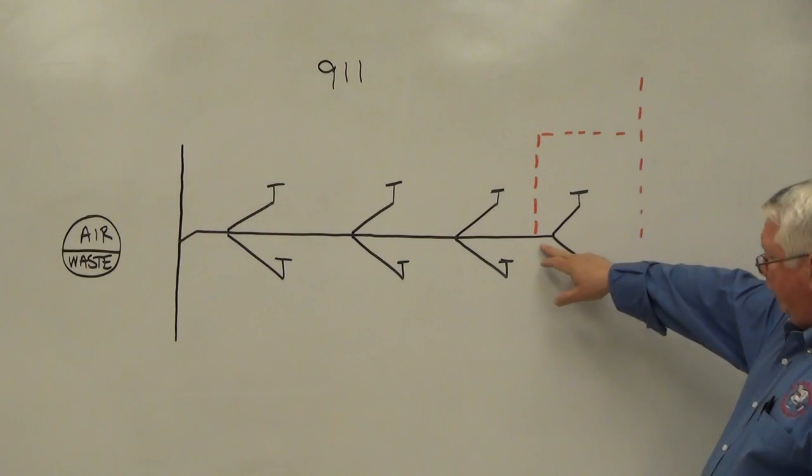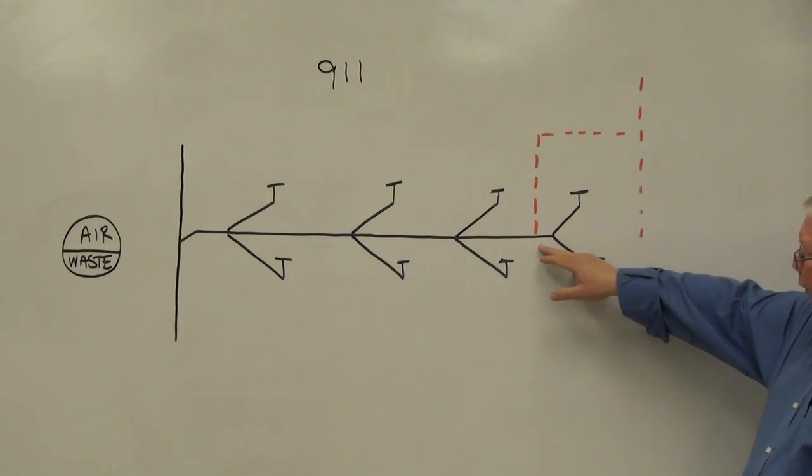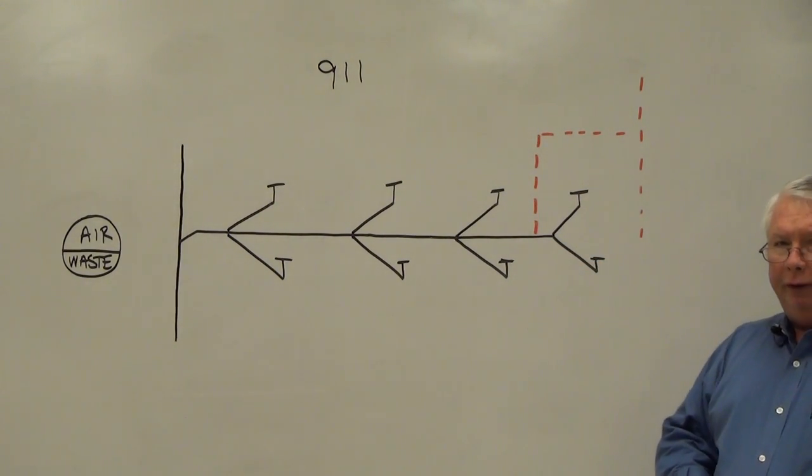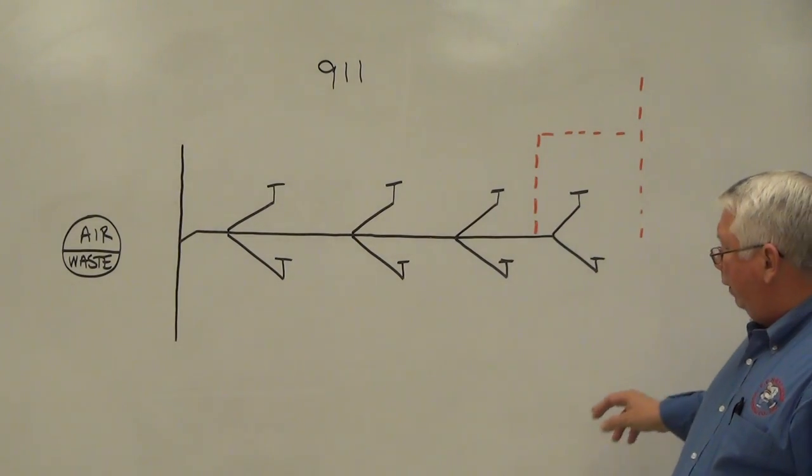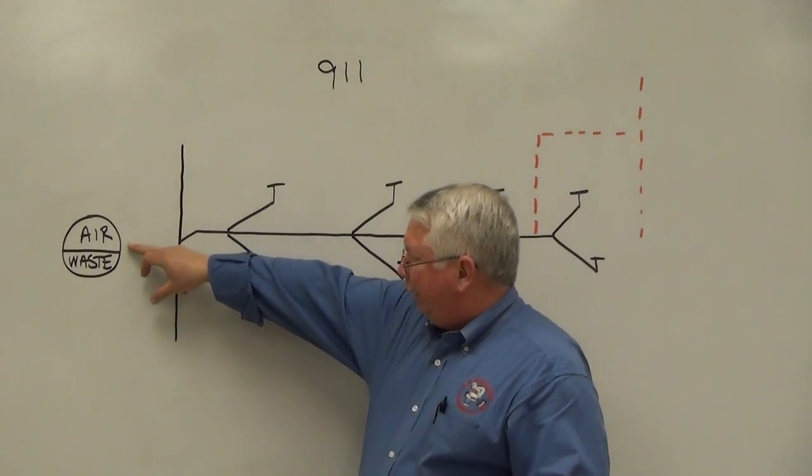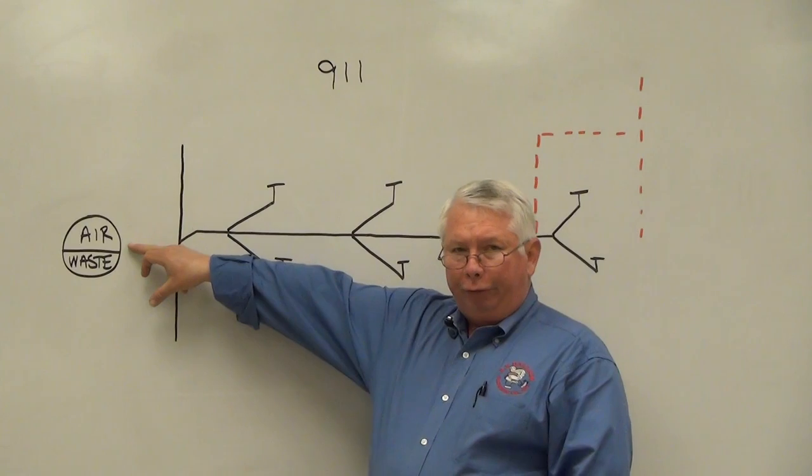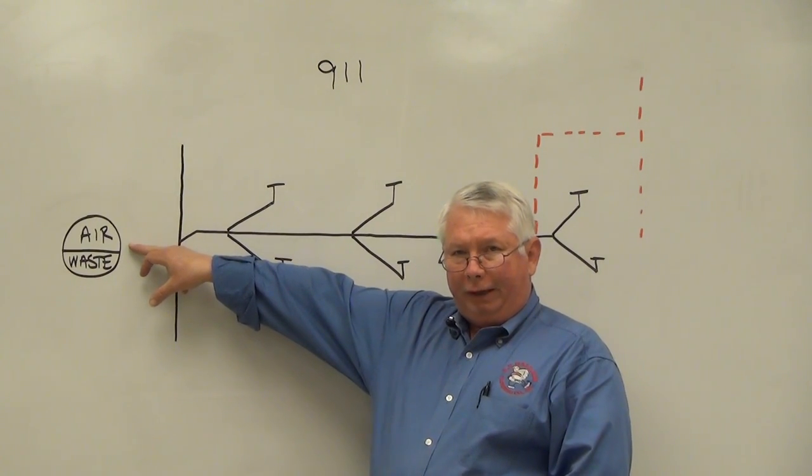The circuit vent pipe connects between the two most upstream fixture drains and it connects on the top of the pipe, therefore allowing the vent connection to be where the air is traveling through the horizontal branch drain that's being circuit vented.